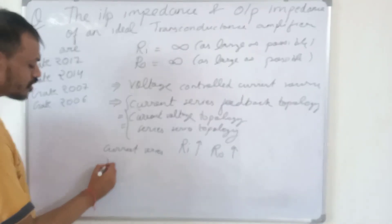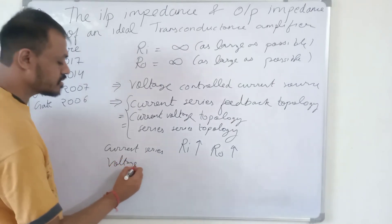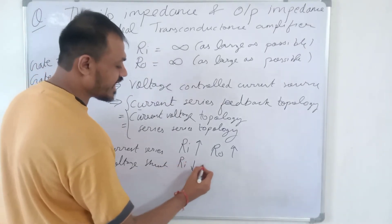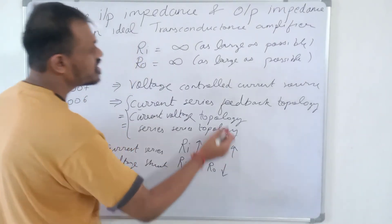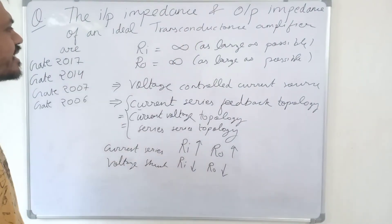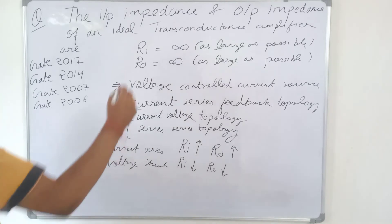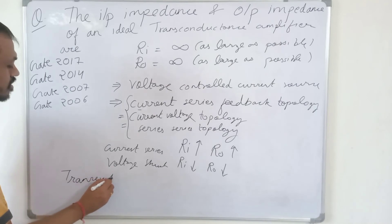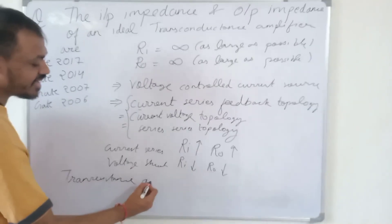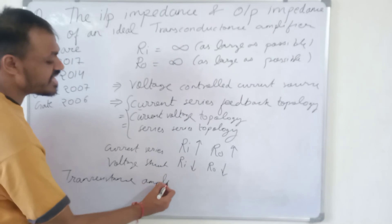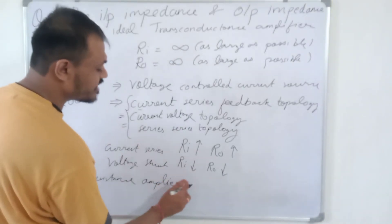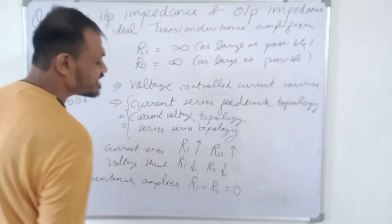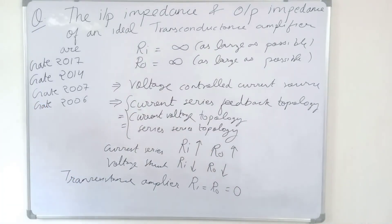If we use Voltage Shunt topology, then both Ri and Ro should be as low as possible — ideally zero. This corresponds to the Transresistance Amplifier.